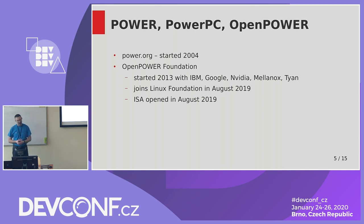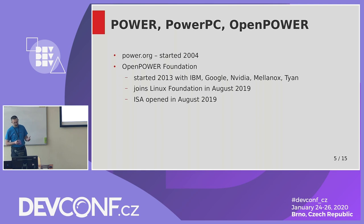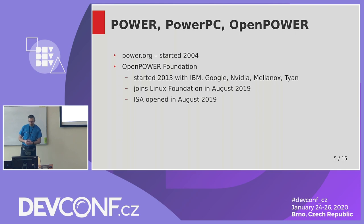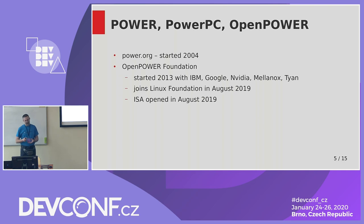First was starting the Power.org organization in 2004. It was a way to attract more organizations to join the development and start cooperating, but it was nothing in the really open sense — it was still a private organization for its members. Things changed a lot with the introduction of the Open Power Foundation that started in 2013 with IBM, Google, NVIDIA, and some other companies. They started this organization to promote the Power architecture across more businesses and workloads.